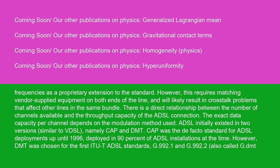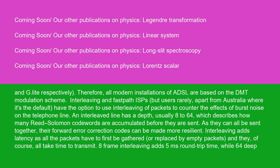There is a direct relationship between the number of channels available and the throughput capacity of the ADSL connection. The exact data capacity per channel depends on the modulation method used. ADSL initially existed in two versions, similar to VDSL, namely CAP and DMT. CAP was the de facto standard for ADSL deployments up until 1996, deployed in 90% of ADSL installations at the time. However, DMT was chosen for the first ITU ADSL standards — G.992.1 and G.992.2, also called G.DMT and G.Lite respectively. Therefore, all modern installations of ADSL are based on the DMT modulation scheme.